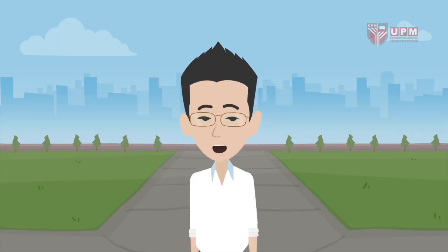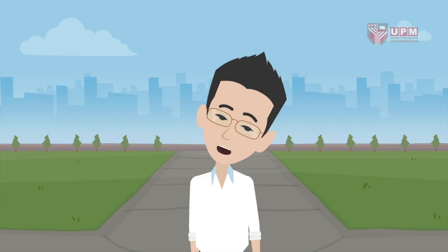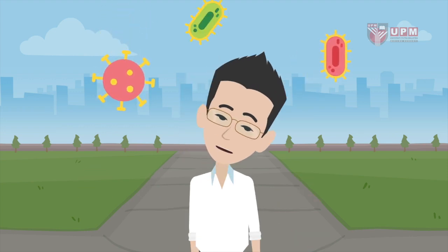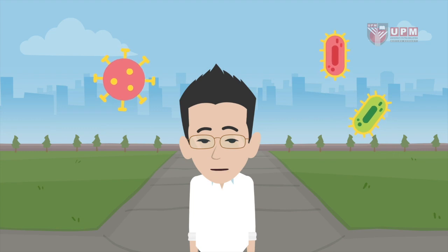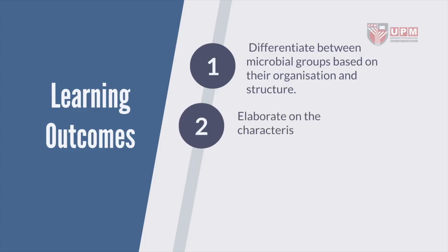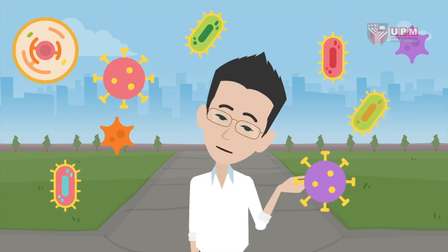By the end of this course you will learn at least three things. Number one: to differentiate between microbial groups — you should be able to distinguish between, for example, bacteriophage and bacteria, or bacteria and archaea. Number two: you should be able to elaborate on some characteristics of certain microorganisms, because there are so many out there you won't be able to learn them all in this short course.